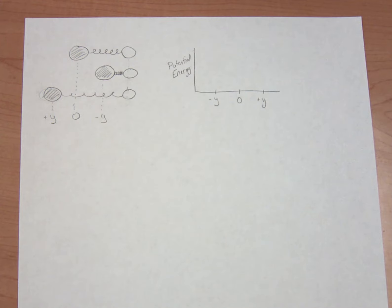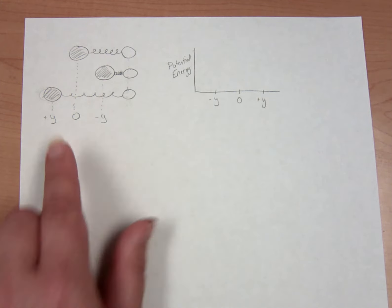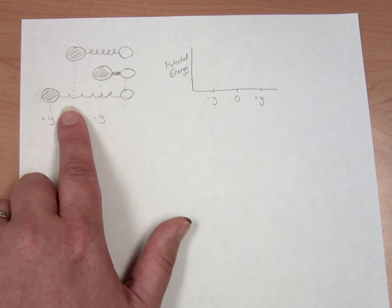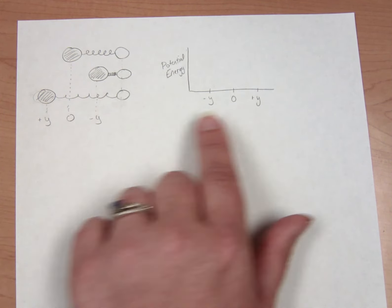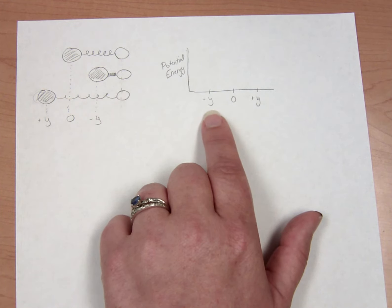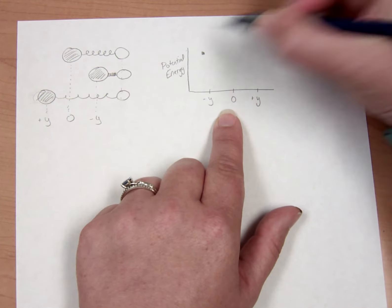In the group work this week you've been looking at the ball-and-spring model that can be used to describe bond vibrations. This functions as two balls on the end of a spring that can either be contracted or stretched, and you should have plotted potential energy as a function of that stretching or shrinking of the spring.